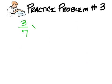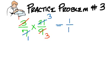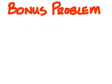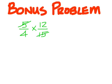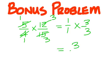Practice problem 3 is 3 over 7 times 21 over 9. You could cancel 3 and 9 to get 1 over 3, then cancel 7 and 21 to get 1 and 3. 3 over 3 is the same as 1. For the bonus problem, 5 over 4 times 12 over 15: cancel 5 and 15 to make it 1 and 3, cancel 4 and 12 to make that 1 and 3 as well. So 1 over 1 times 3 over 3 is 3 over 3, which is 1.